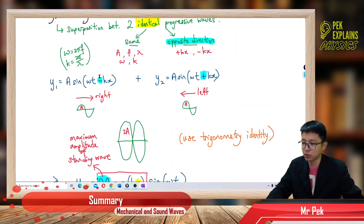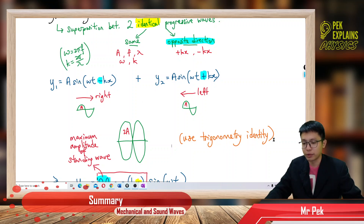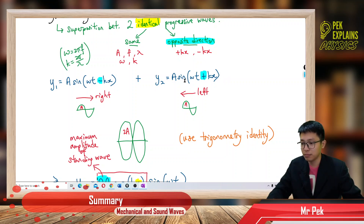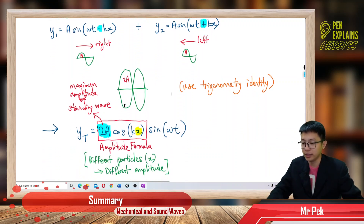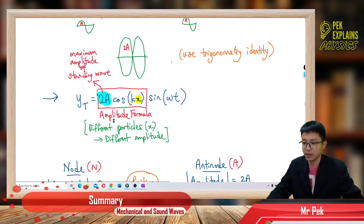How do you actually add up these two equations? We need to use trigonometric identity — this is mathematics knowledge. You need to use trigonometric identity: sine(a + b) becomes sine a cos b plus cos a sine b. When you have sine(a − b), you use sine a cos b minus cos a sine b. You develop from there, you add up, and finally you will get the equation for the stationary wave: y total equals two amplitude cos kx sine omega t.